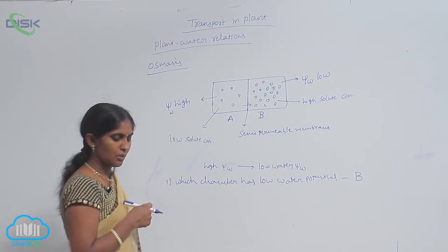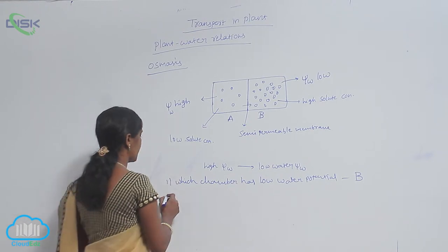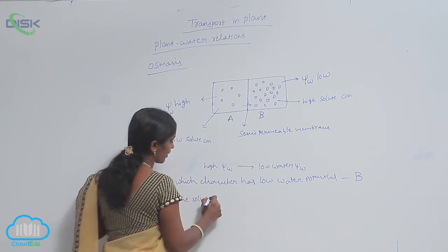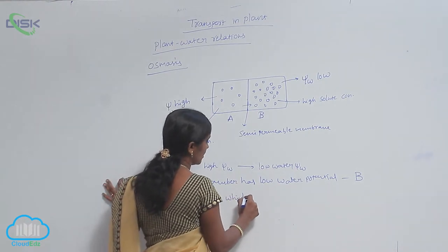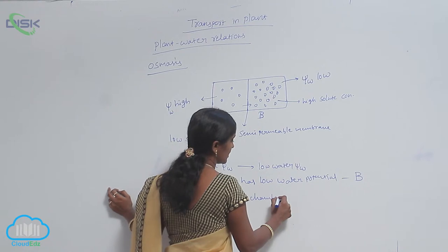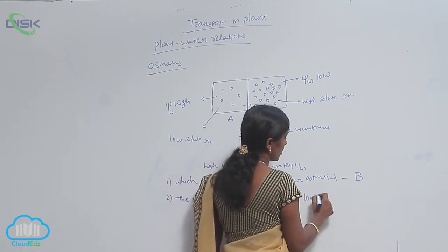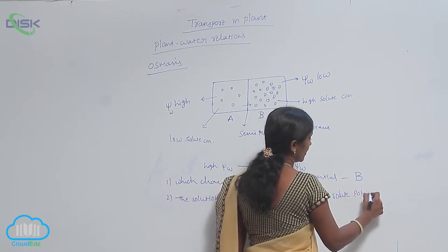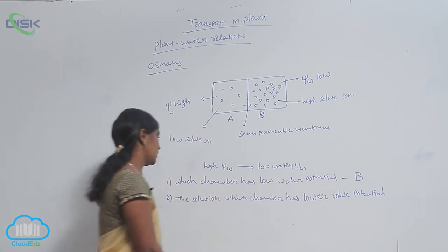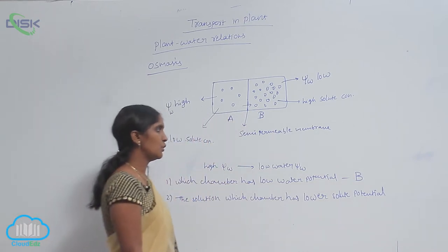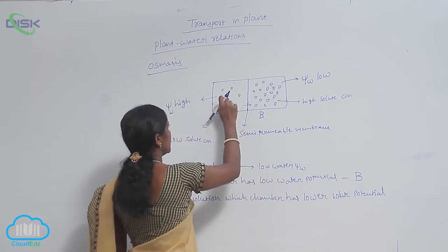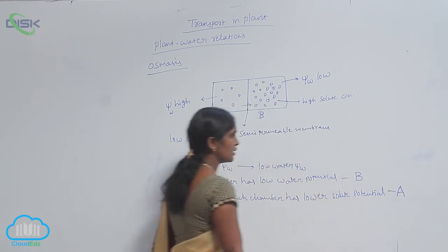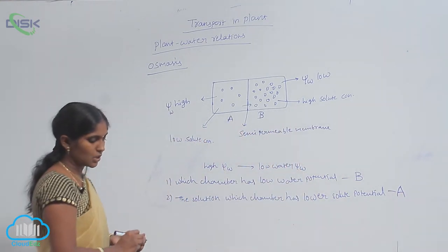The solution of which chamber has lower solute potential? That is A, because very less solutes are dissolved in water.